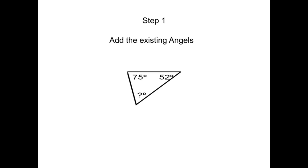So when you find the missing angle of a triangle, all you need to do is get the existing angles and add them all together.